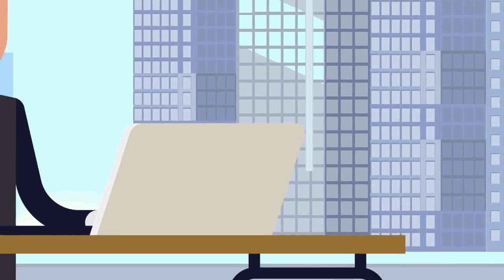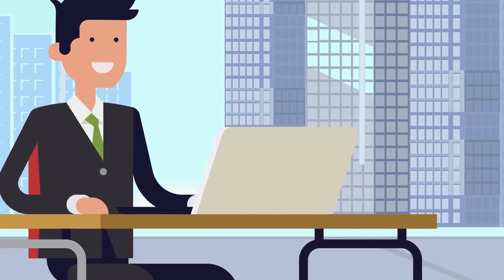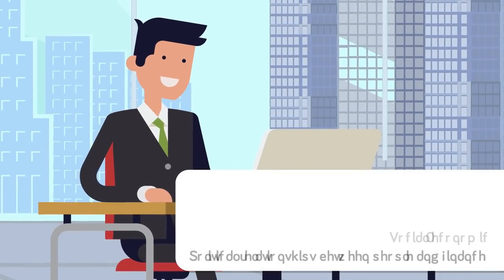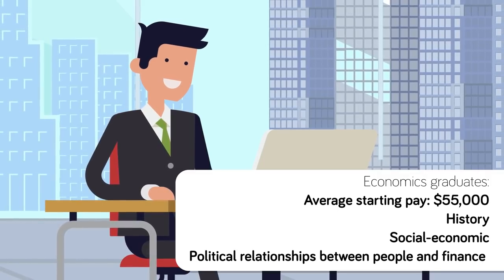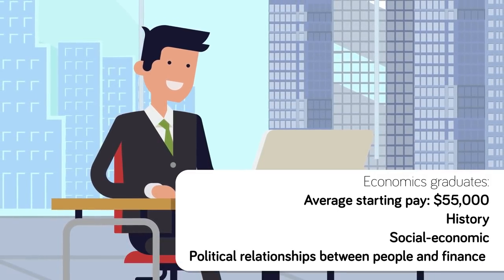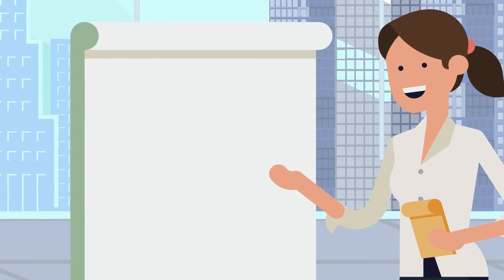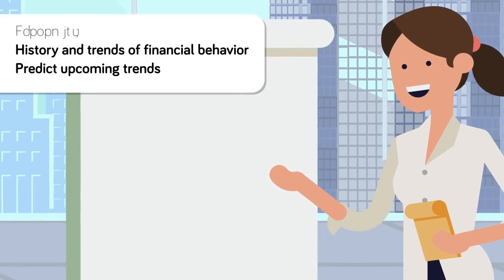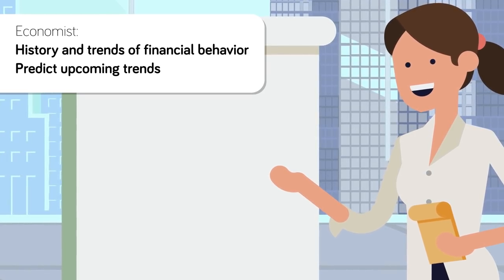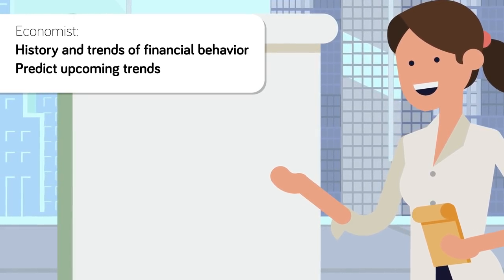Economics graduates can expect to start around $55,000 a year. A four-year degree studying the history, socioeconomic, and political relationships between people and finance could result in you making some serious money for yourself. Economists are required to look at the history and trends of financial behavior and predict upcoming trends. If the behavior and interactions of economic agents, including individuals in financial markets, keeps you awake at night, this is the degree program for you.